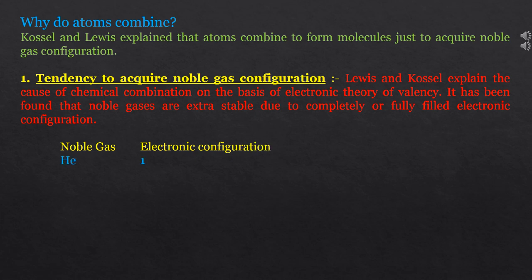It has been found that noble gases are extra stable due to completely filled electronic configurations. For example, the electronic configuration of helium is 1s2, so here the duplet is complete for helium. In case of neon, its electronic configuration is 1s2 2s2 2p6. So here the outermost shell, that is the valence shell, is second, and the octet is complete — meaning 8 electrons in the valence shell.